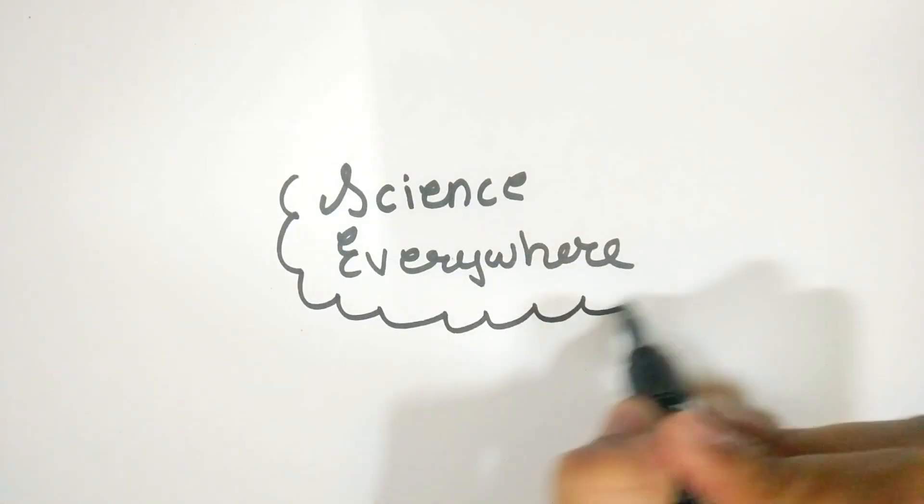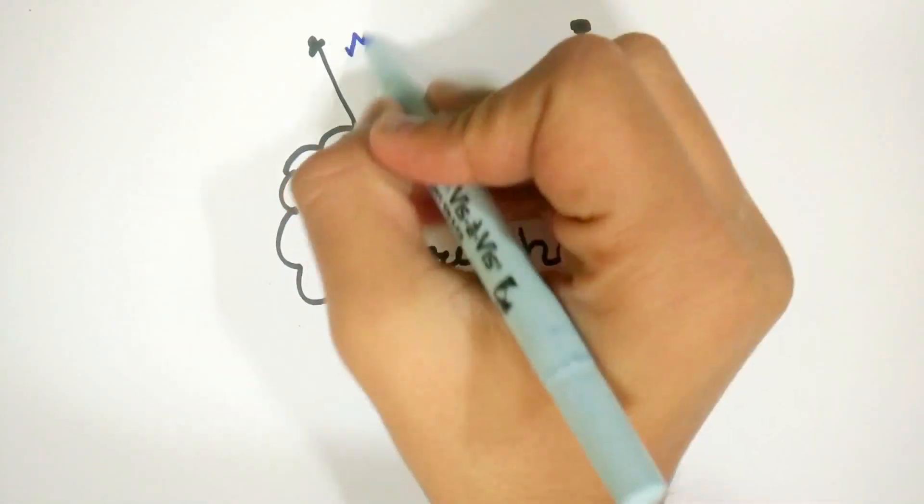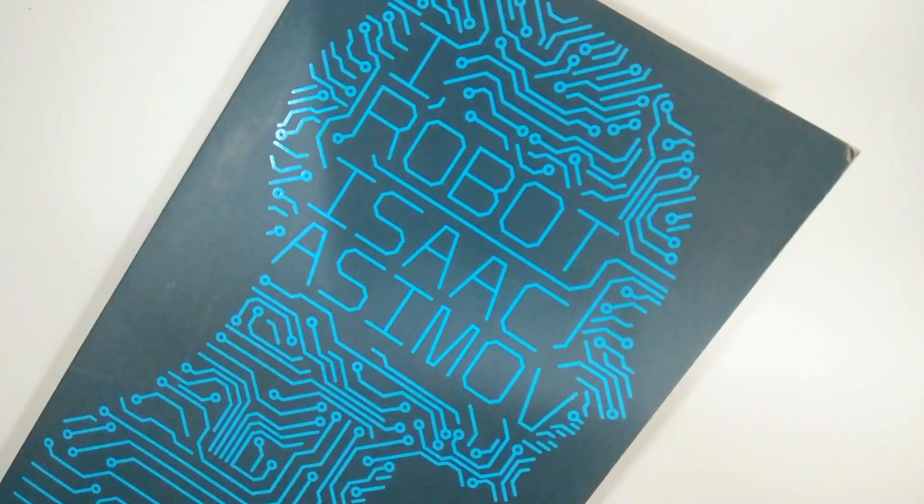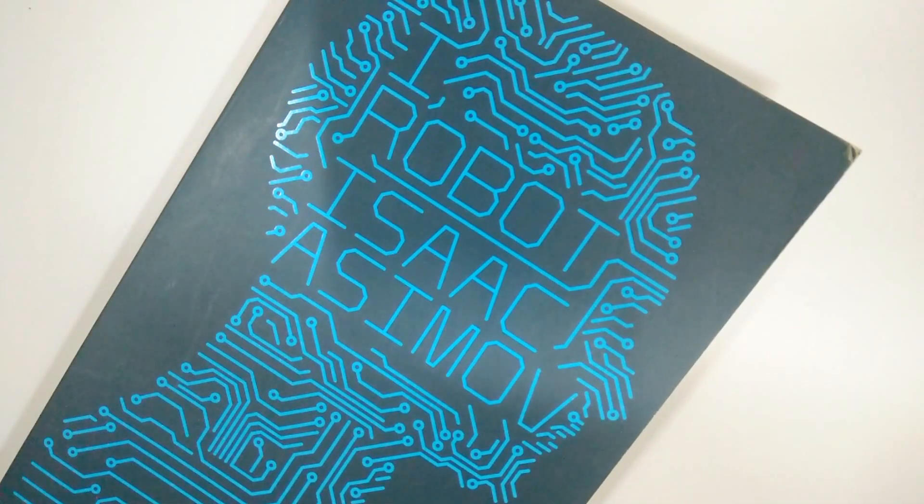Recently, I started reading this 1950s science fiction book, iRobot by Isaac Asimov. So, I decided, why not make a video on machine learning and artificial intelligence? Here you go.